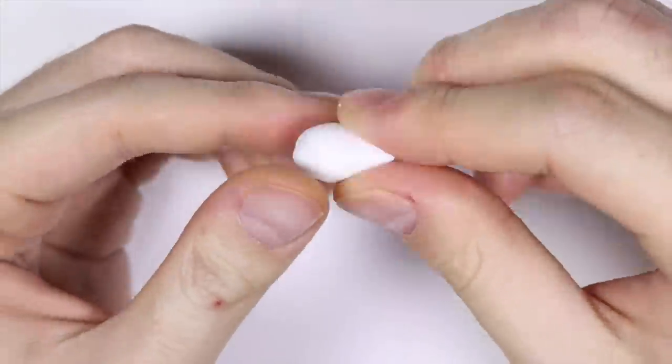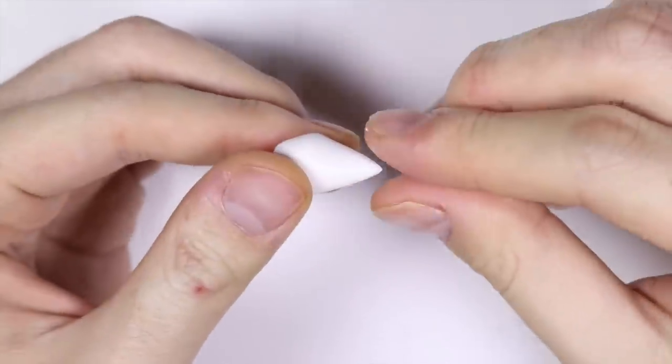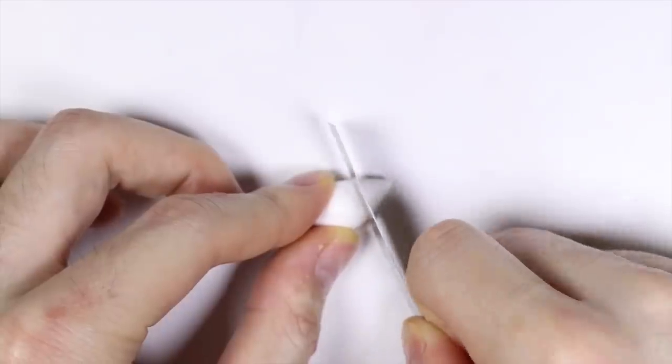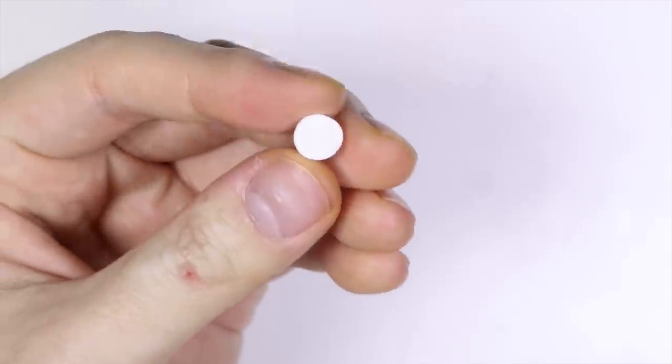Next I took some white clay and we're gonna use this to make the cone so I rolled it into a cone shape. Then I cut off the end and let that bake according to instructions.